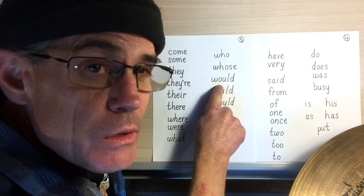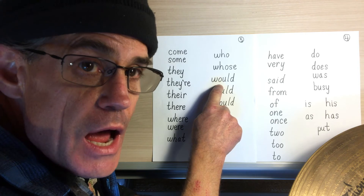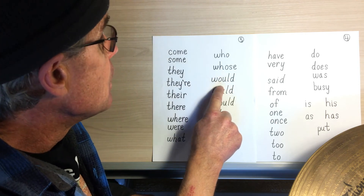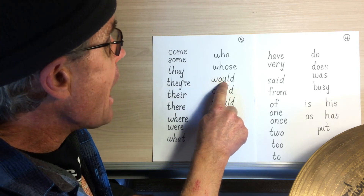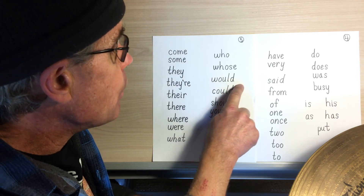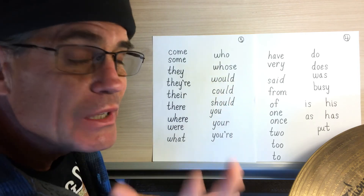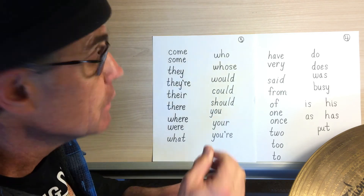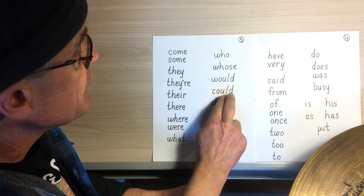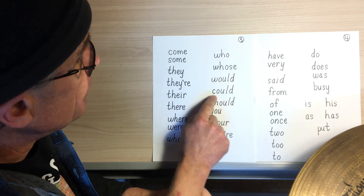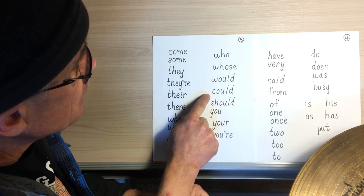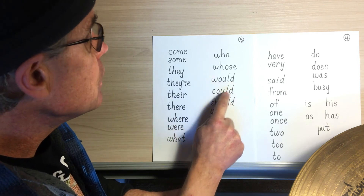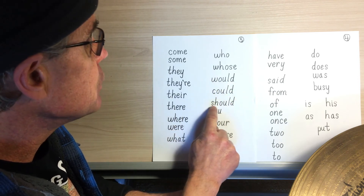We learned that O-U does 'ow' — 'wuh-owled,' 'wawled' — but that doesn't say 'wawled,' it says 'wood.' These three are the 'uds': wuh, kuh, shuh — would, could, should.